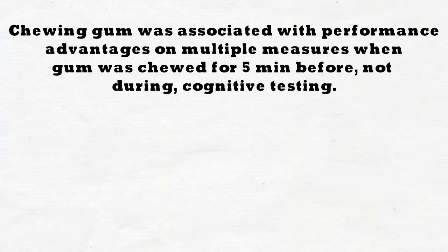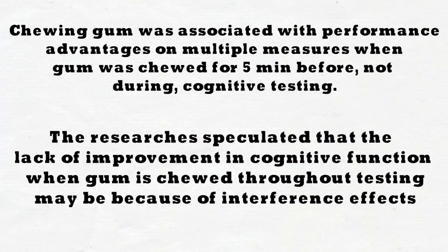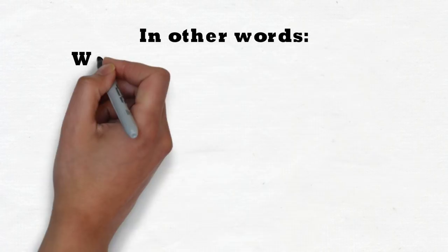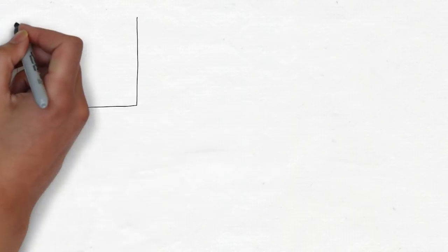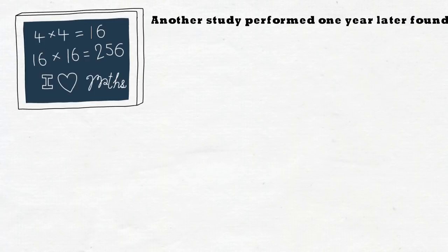Notice we said chewing gum five minutes before the demanding task, and not during the task. The researchers speculated that the lack of improvement in cognitive function when gum is chewed throughout testing may be because of interference effects. In other words, we are bad at multitasking.